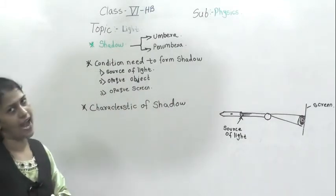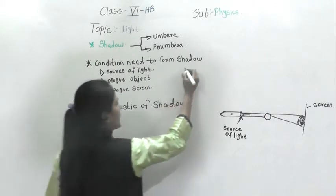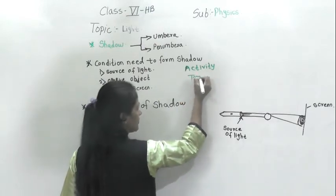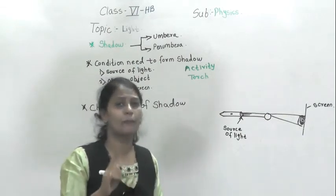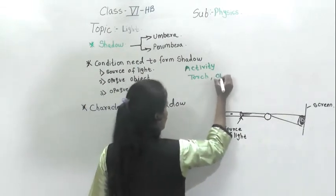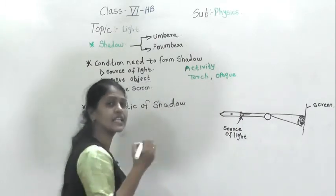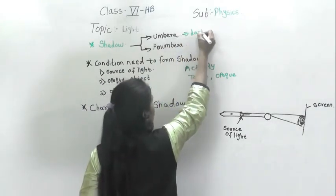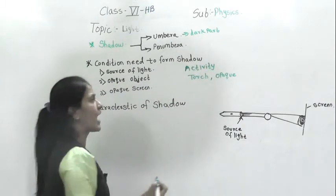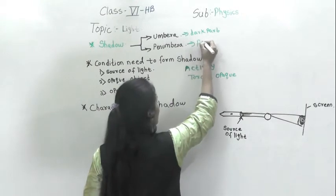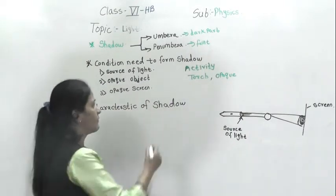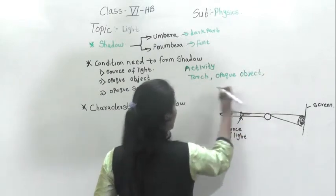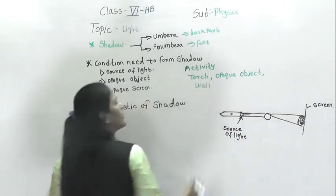You can also observe the two types of shadows — umbra and penumbra. Umbra is the dark part of a shadow, while penumbra is the faint part of a shadow. For the activity, you will need a torch, an opaque object, and a screen — or you can simply use your wall.